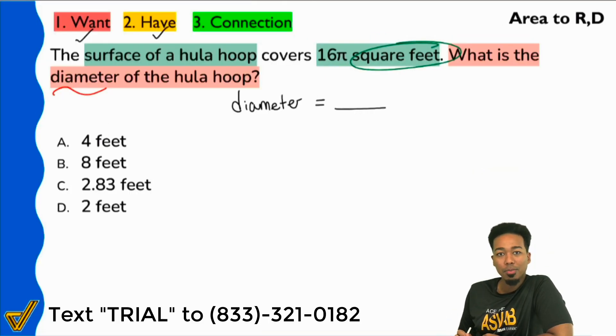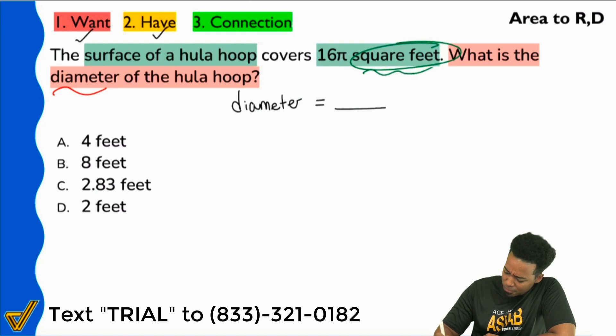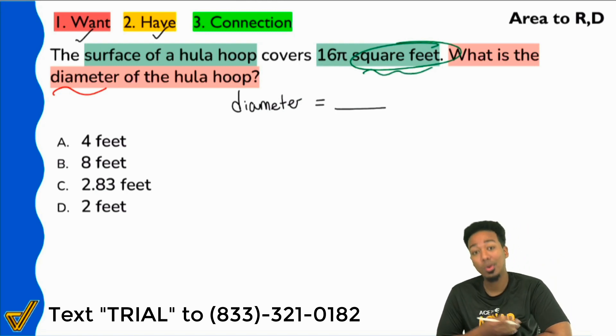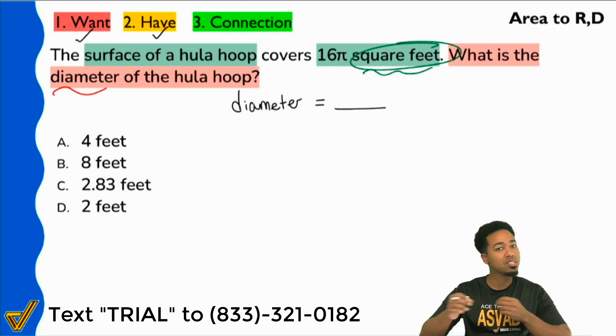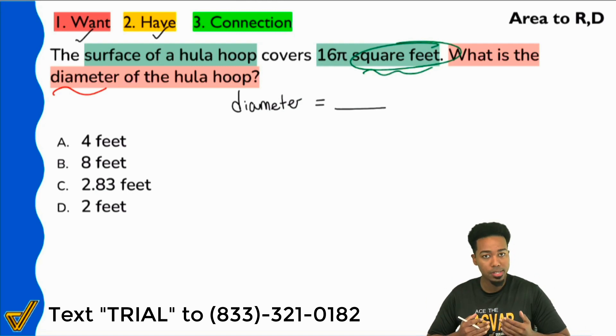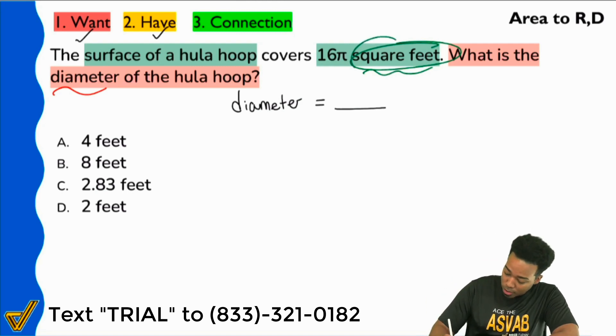Knowing what that keyword means. Square feet. What does that mean? Well, that means that you're talking about area. Remember, square units dictate area. Regular units, that's just distance, could be perimeter, could be circumference. But then cubic units is volume. Again, square units, that's area.